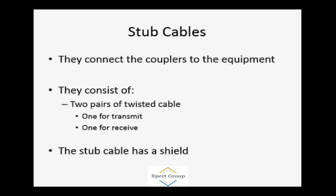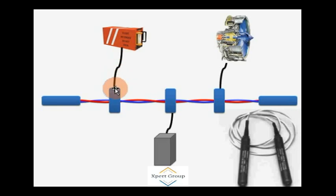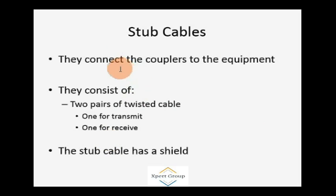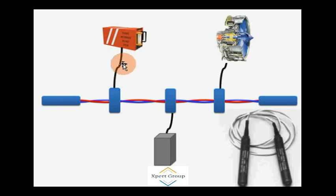Stub cables connect the couplers to the equipment. They consist of two pairs of twisted pair cables: one for transmit and one for receive. The stub cable has a shield.